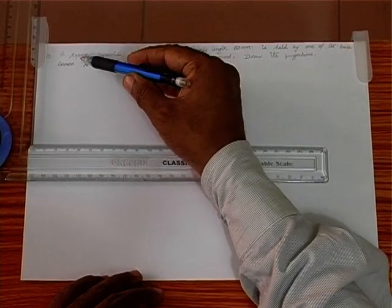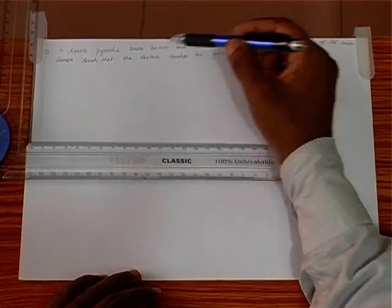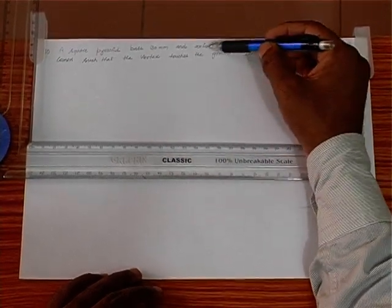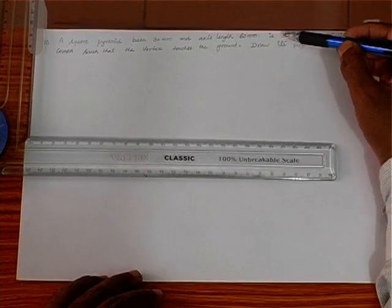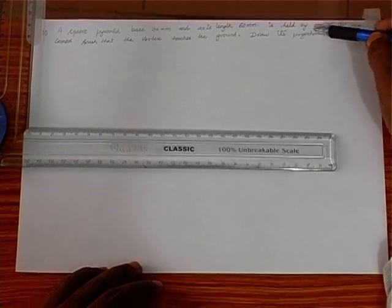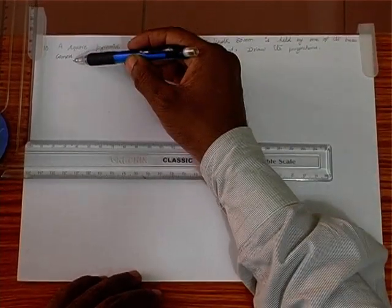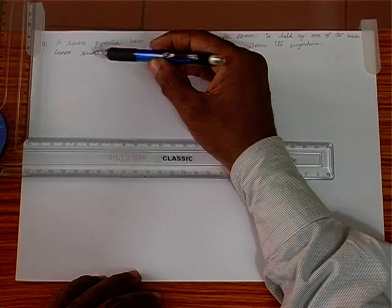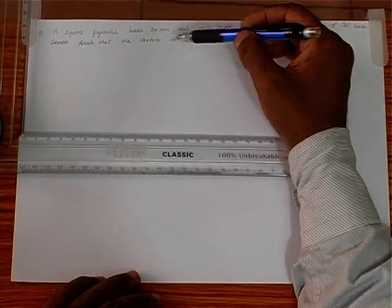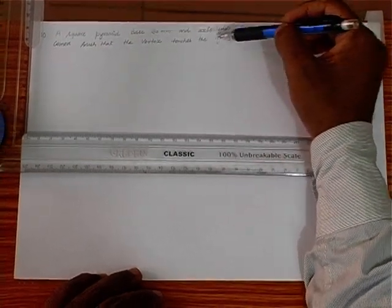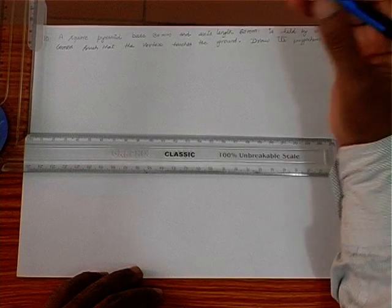Number 10: a square pyramid with base 30 mm and axis length 60 mm is held by one of its base corners such that the vertex touches the ground. Draw its projections.